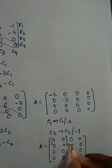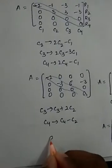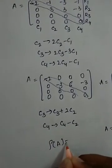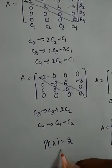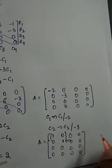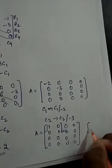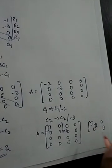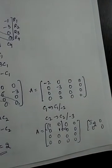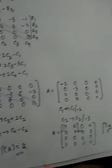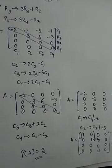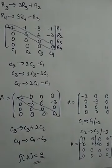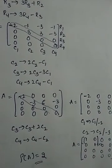So the rank of A is 2. Why? Because it is like I sub 2 with zeros around it — here it is a 2 by 2 identity matrix. So the rank of the matrix is 2. Please subscribe to my channel.